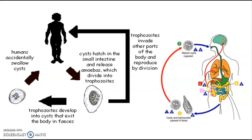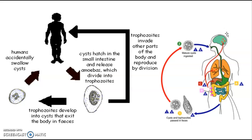If the cysts enter the bloodstream, they can cause infection in the brain, lungs, and can also damage the liver. In more advanced conditions, through the bloodstream they can damage other vital organs of the body.